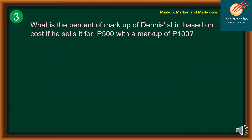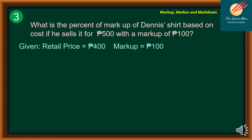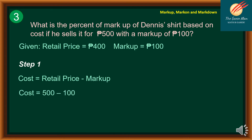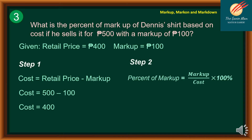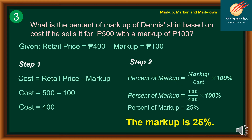Problem number three: What is the percent of markup of a denture based on cost if it sells for 500 pesos with a markup of 100 pesos? Given: retail price = 500 pesos, markup = 100 pesos. Step one: cost = retail price minus markup = 500 minus 100 = 400 pesos. Step two: percent of markup = markup divided by cost times 100% = 100 divided by 400 times 100% = 25%. Therefore, the markup is 25%.